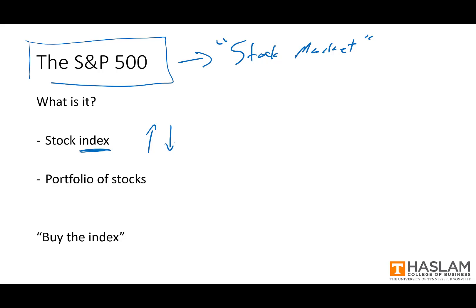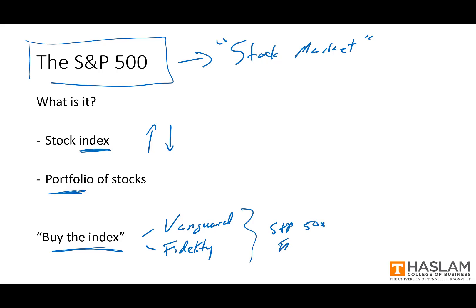We can also think of the S&P 500 as an investment portfolio of these 500 large U.S. stocks. Investors can buy the index, or buy the stock market, by purchasing shares in a mutual fund that holds the 500 S&P stocks with relative weights based on the stocks' relative market values. Many large mutual fund companies such as Vanguard or Fidelity offer these S&P 500 index funds, and many of you likely have these funds in your portfolios.